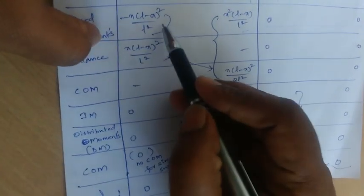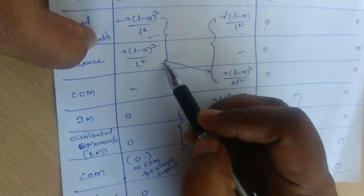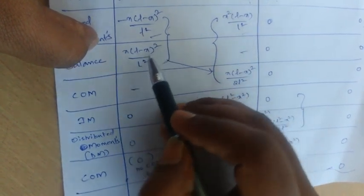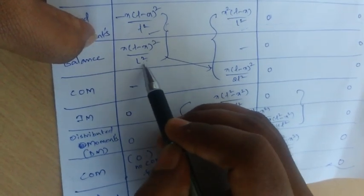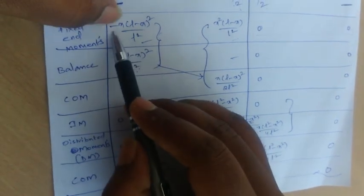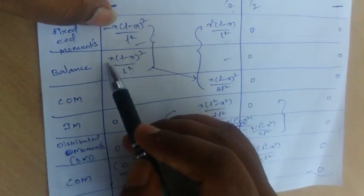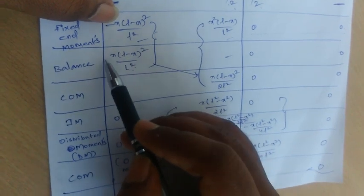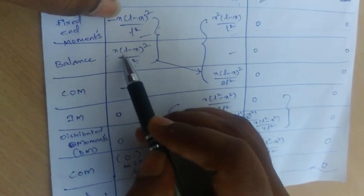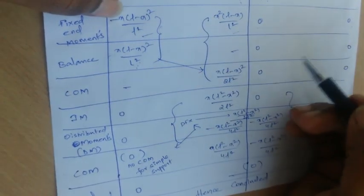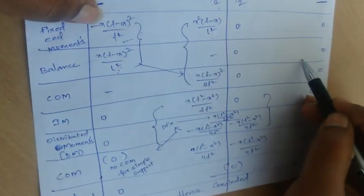To balance, we make the moment at the simple support zero by adding an opposite moment. That is, we add plus X(L−X)²/L² to cancel the existing minus X(L−X)²/L² at end A. This is how balancing is done at the simple supports.